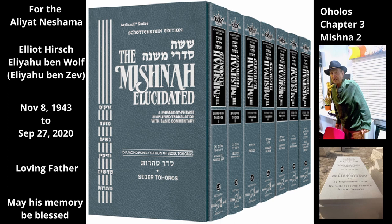Our Mishnah gives more details about these laws. If a ladle full of corpse dust — the dust that remains after a corpse is decomposed — was scattered inside a house and became mixed with some of the dirt from the floor, the house is tammy. Any person or item in the house is tammy, although the corpse dust is mixed with the dirt from the floor; it is not nullified. It thus transmits Tuma through ohel, and all the contents of the house become tammy.